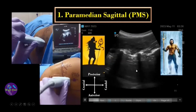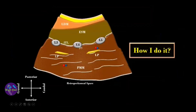Once you get the trident view, the next step is to insert your needle through the acoustic window, stimulate the lumbar plexus, and once you get the desired response, deposit the drug.